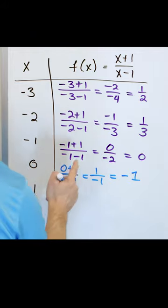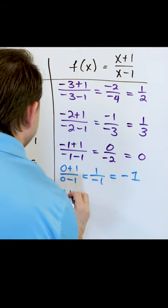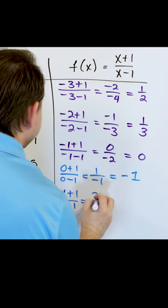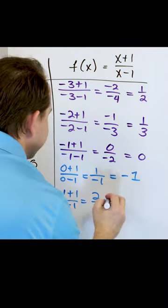Now what happens when I put a value of one in here? Put the value of one in, I'll get one plus one over one minus one. That's a problem, two over zero. I can't do that, it's undefined.